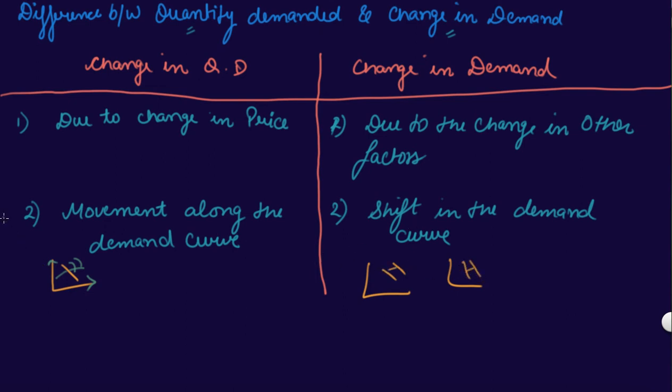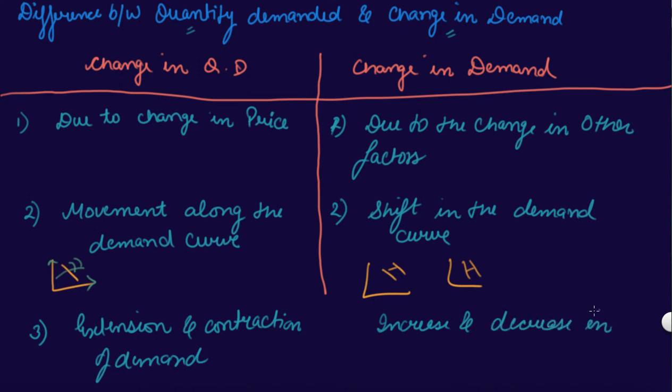Third is, in this there was extension and contraction of demand. In this, it was increase and decrease in the quantity demanded, right? So this is the difference between your quantity demanded and the change in the demand.